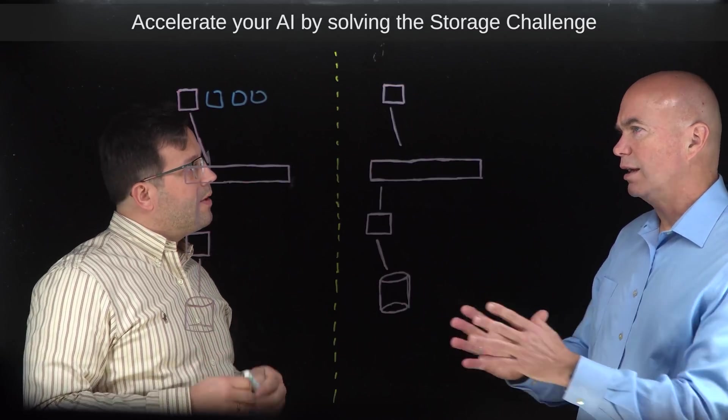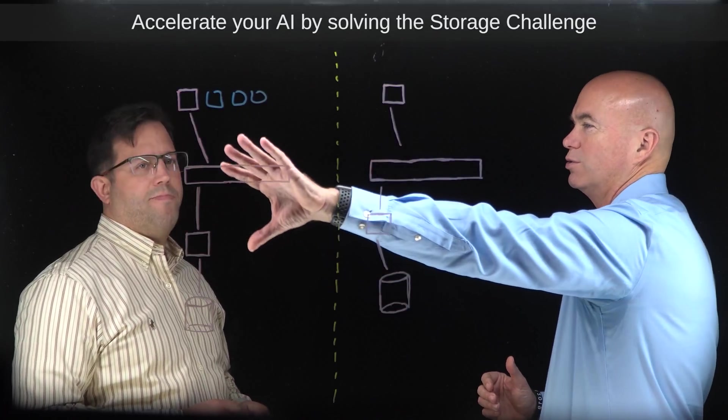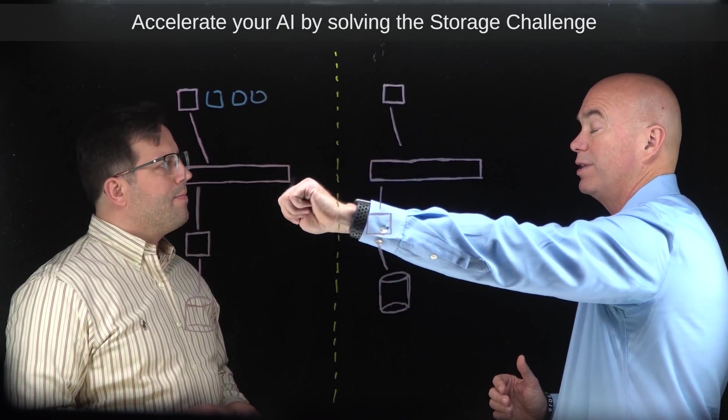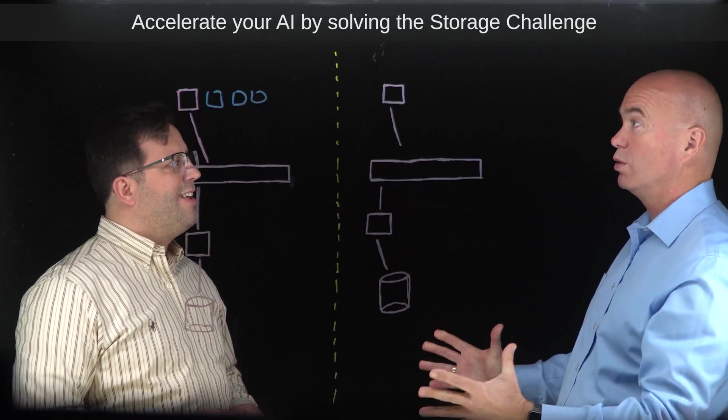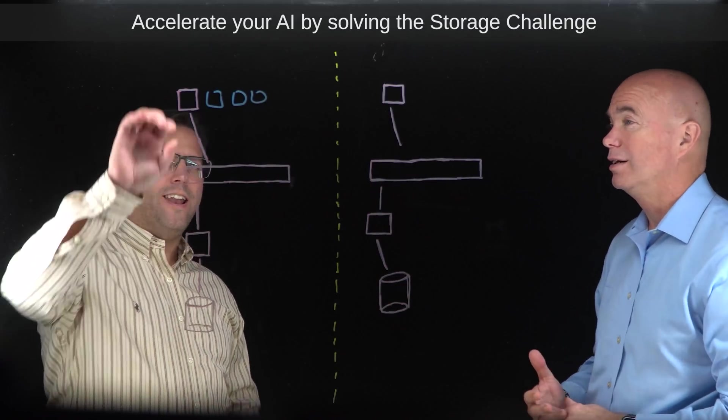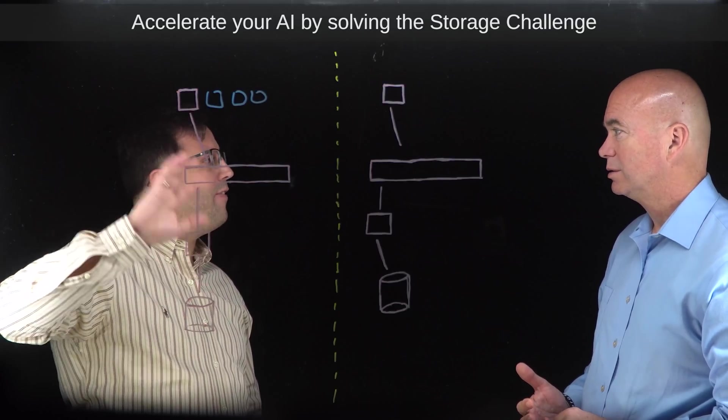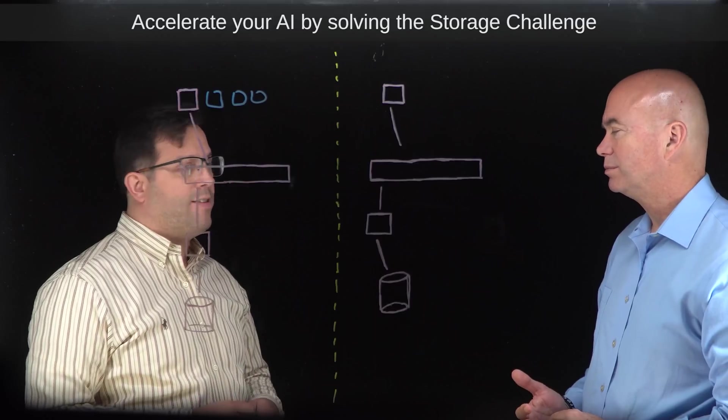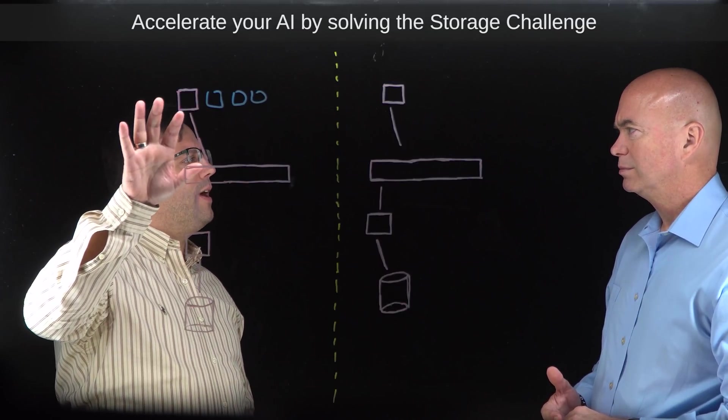And clearly these environments tend to scale, right? Because what I see happen a lot with AI is it's almost like a skunkworks project to start with, and then people are like 'whoa, it works,' and then poof. Exactly. That's why it's very easy to start with this model. These are typically NFS filers, more traditional NAS appliances that people use. And the challenges really come in scale.